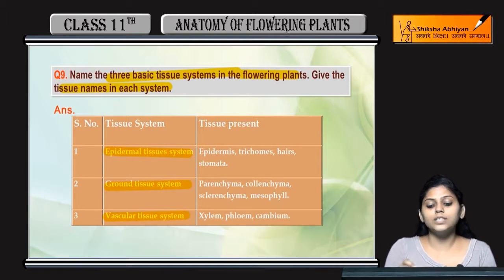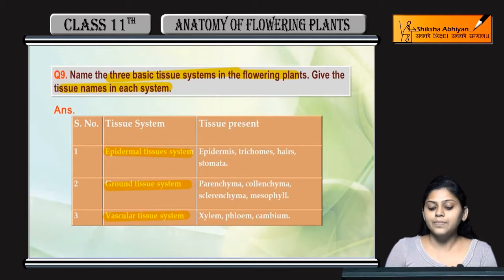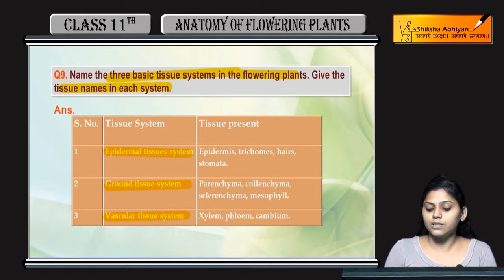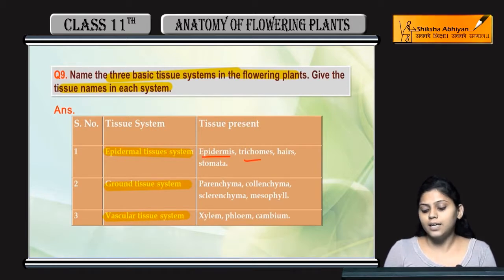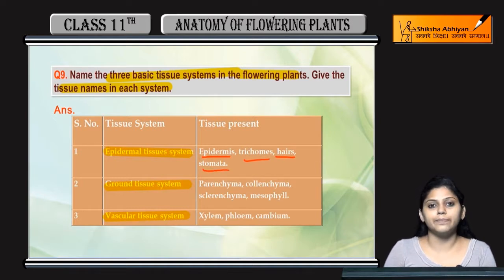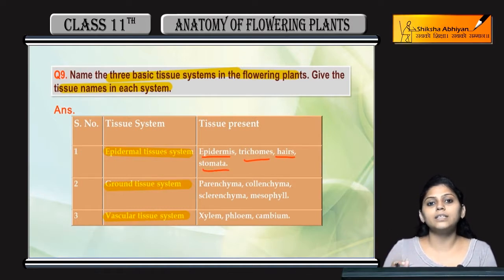The tissues present in the epidermal tissue system are: epidermis, trichomes, hairs, and stomata. This is mainly the outer layer.